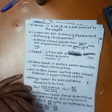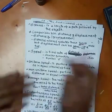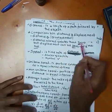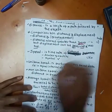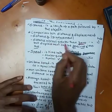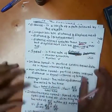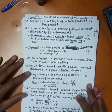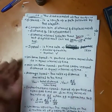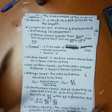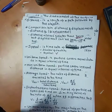Distance is always greater than zero. The displacement can be negative or positive depending on direction, while the total distance always remains non-negative.